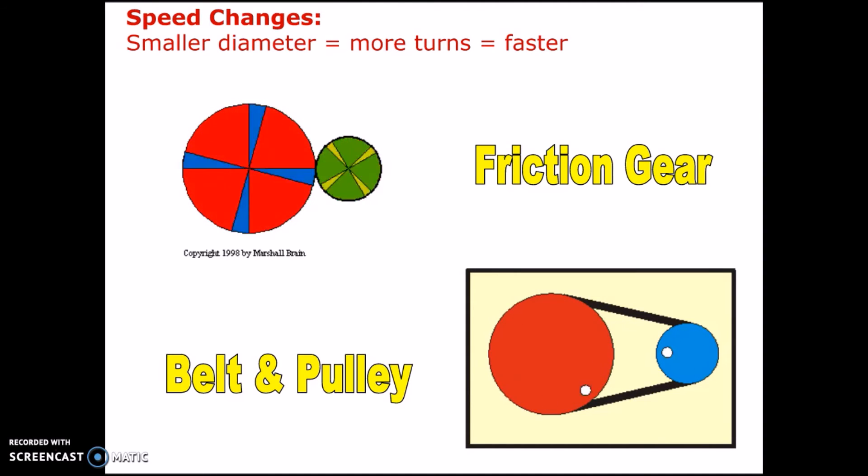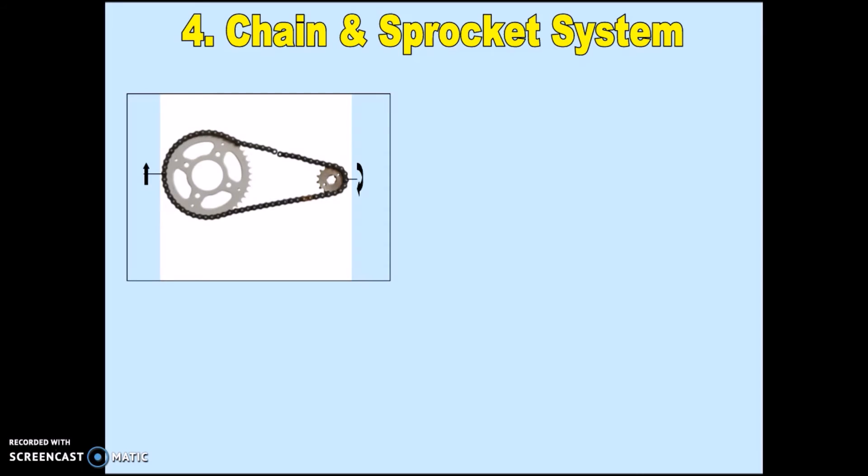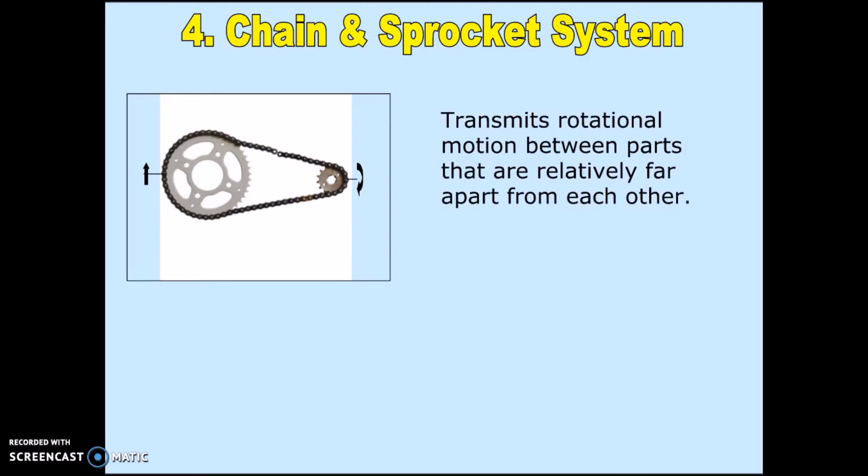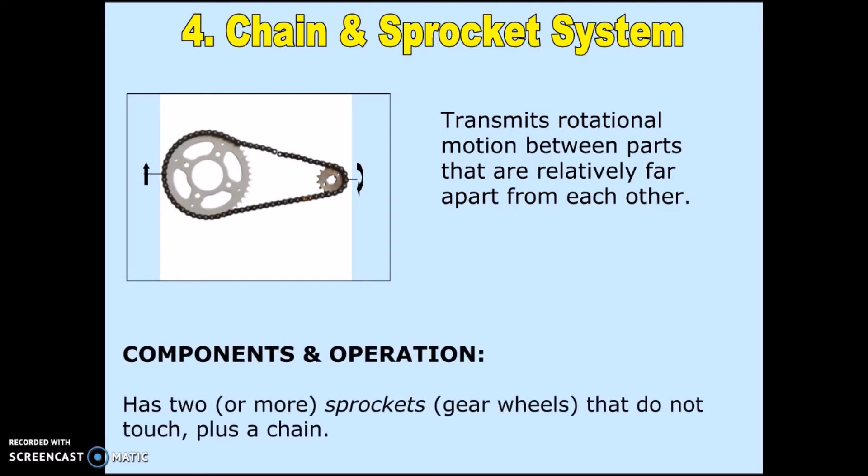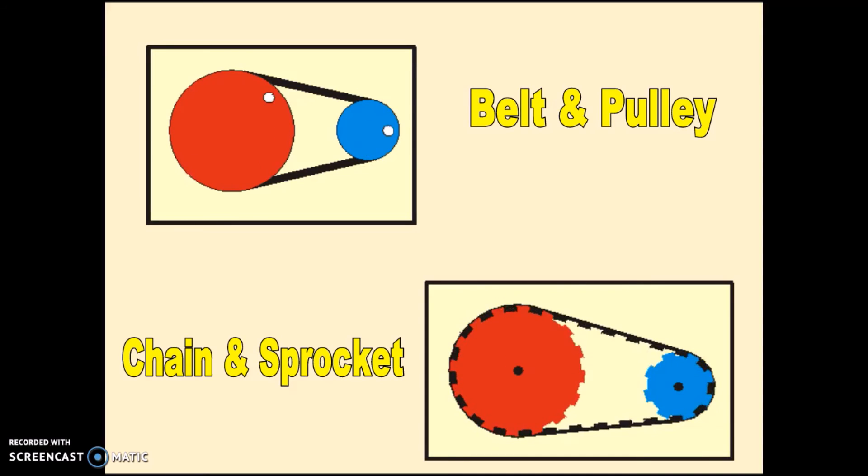Chain and sprocket is another one of those systems whose name tells you exactly what the components are. Each one of these wheels with teeth is called a sprocket, and it is connected not by a simple belt, but by a chain. Once again, don't confuse belt and pulley and chain and sprocket. Belt and pulley are smooth around the pulleys and around the belt, but chain and sprocket, you're dealing with chains and teeth. It is anything but smooth.